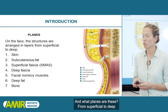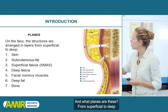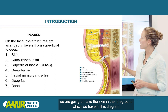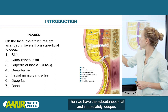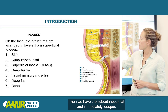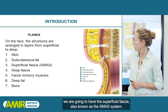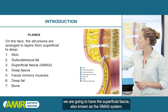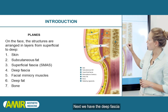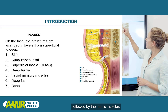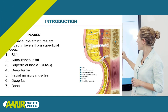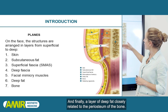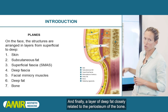What planes are these? From superficial to deep, we're going to have the skin in the foreground, as shown in this diagram. Then we have the subcutaneous fat, and immediately deeper we're going to have the superficial fascia, also known as the SMAS system. Next, we have the deep fascia, followed by the mimic muscles. And finally, a layer of deep fat closely related to the periosteum of the bone.